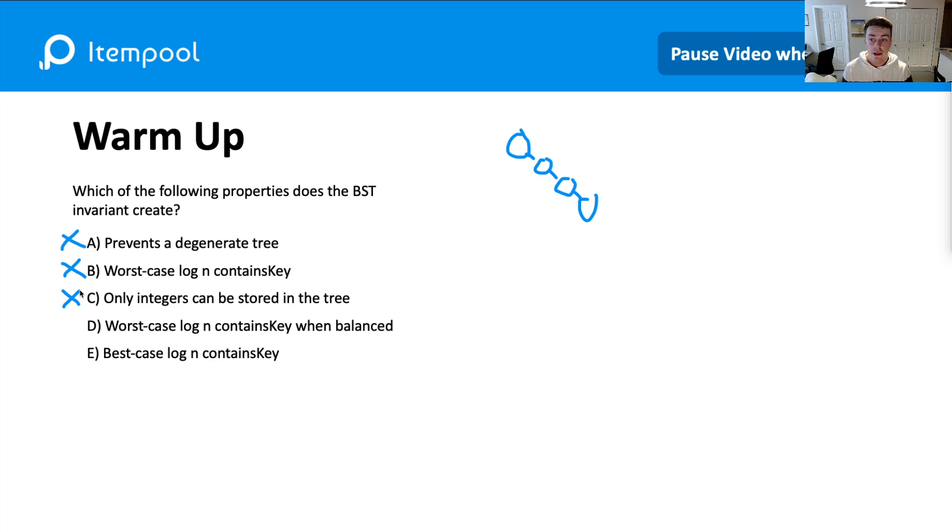Now if we think about D, the worst case log n contains key when balanced, this is actually going to be true. Now you might be wondering what's the difference between B and D. Why is in B the worst case log n not true, but in D worst case log n is true. And the idea here is that B and D are just different cases. So in B we're asking what is the overall worst case. I didn't add any other qualifiers on the state of the tree, just what's the worst thing that could possibly happen. Where in D I'm saying well what's the worst thing that could happen if the tree is balanced. Those are just two separate cases that you could then do a runtime analysis on or an asymptotic analysis on. So D, we will have this log n contains key if our tree is balanced.